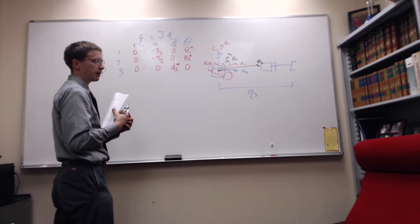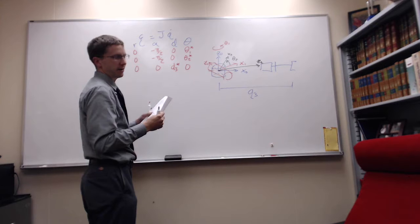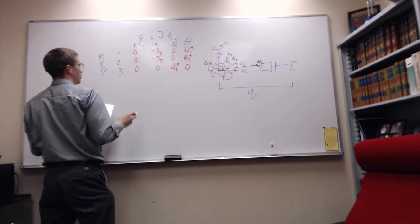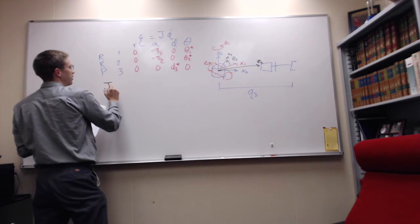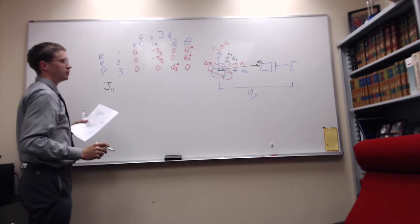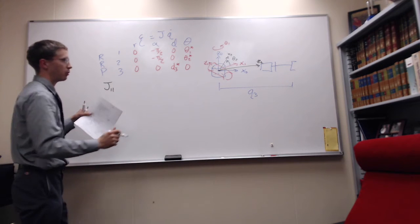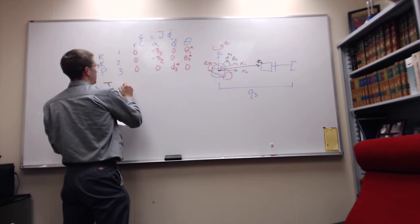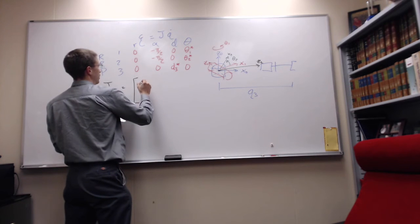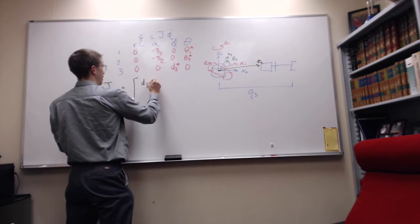And so I'm not going to expect you to find the singularities, because we've got a different question that's about that. So I'm just going to give you the Jacobian, and I'm going to give you the J11s, the velocity components of the Jacobian.